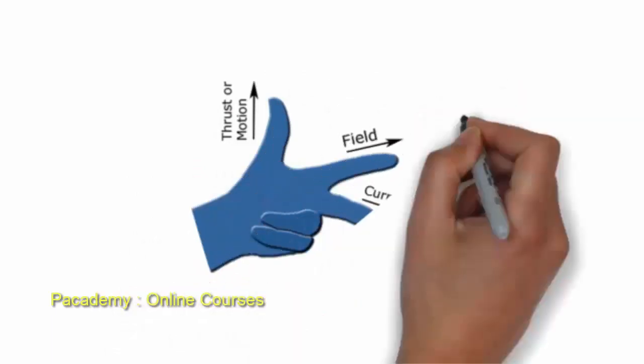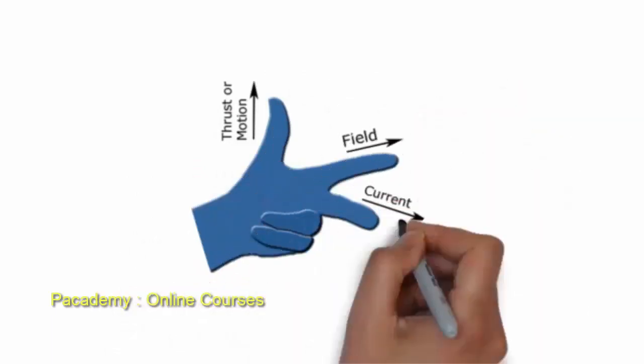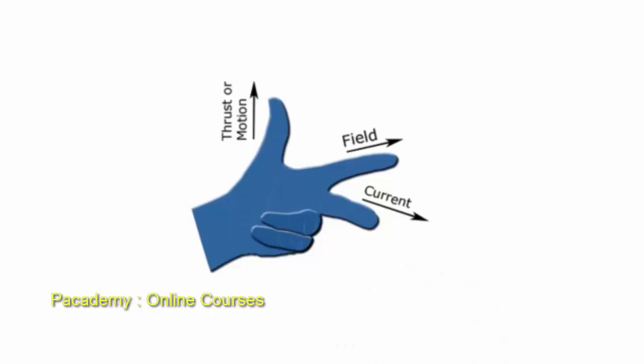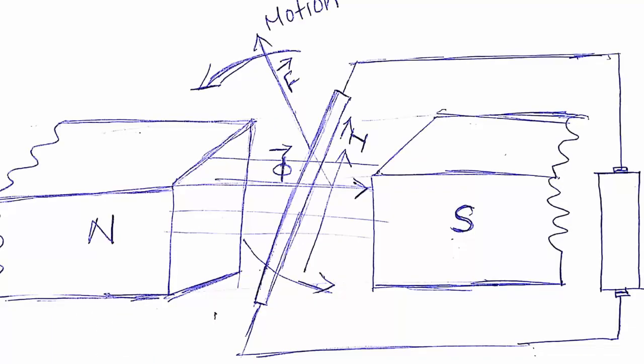Fleming's left-hand rule states: if you imagine your middle finger points in the direction of the current and your index finger points in the direction of the field, then your thumb will always give the direction of the motion or the force direction.